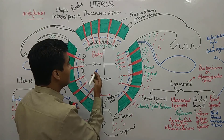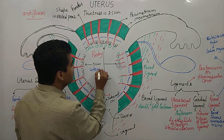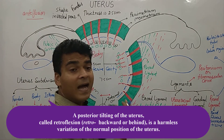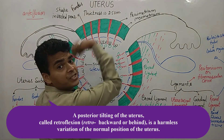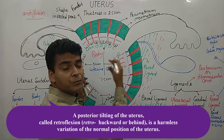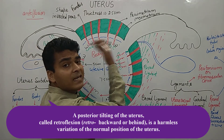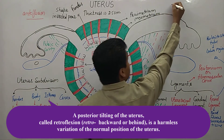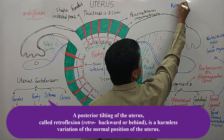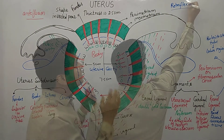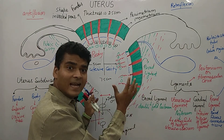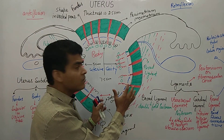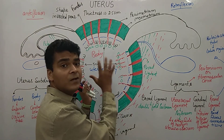The internal space is known as the uterine cavity. If the posterior side of the uterus tilts backward, we call that position retroflexion. These are our external anatomical structures. Now we are going to discuss the histology of the uterus.